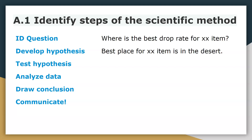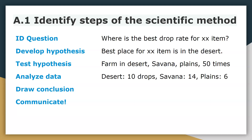When testing the hypothesis, you want to go to different locations to see if other areas have a better drop rate. So you'd try farming in a desert, farming in a savannah, and farming in the plains, defeating a certain monster 50 times in each location. When analyzing the data, you'd record how many times the item dropped: in 50 defeats you got 10 drops in the desert, 14 drops in the savannah, and 6 drops in the plains.